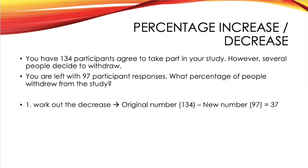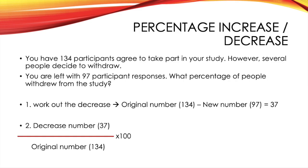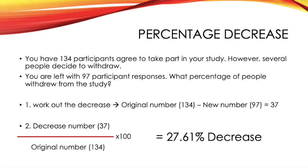The first thing you need to do is work out the decrease. In order to do this, you need to take your original number, which was 134, and take away the new number, which was 97. This leaves you with the decrease of 37. What you then want to do is take your decrease number, so 37, and divide this by the original number, which was 134. You then times this by 100 to make it a percentage. And when you type this into your calculator, you should find that there is a 27.61% decrease in the number of participants.